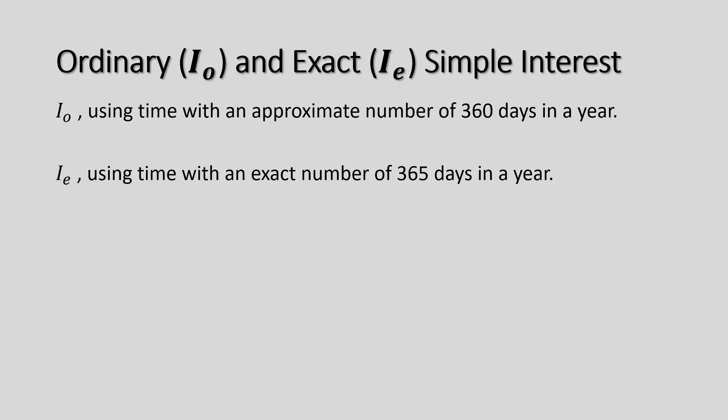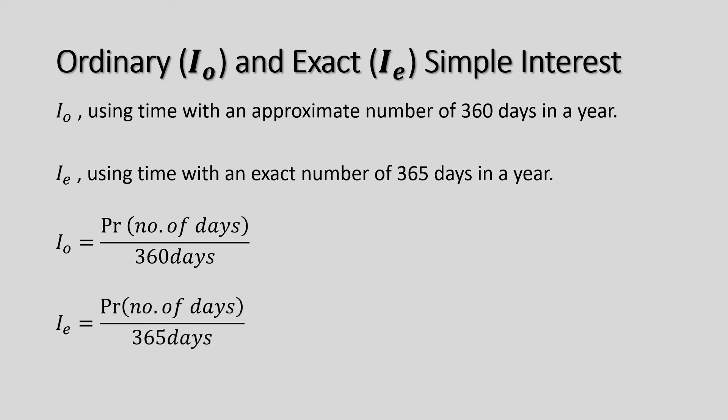Since we are talking about simple interest, the formula is the same: I equals P times R times T. But this time, we use 360 days as the basis for I_O and 365 days for I_E. For ordinary simple interest, the formula is P times R times the number of days divided by 360. For exact simple interest, it is P times R times the number of days divided by 365.